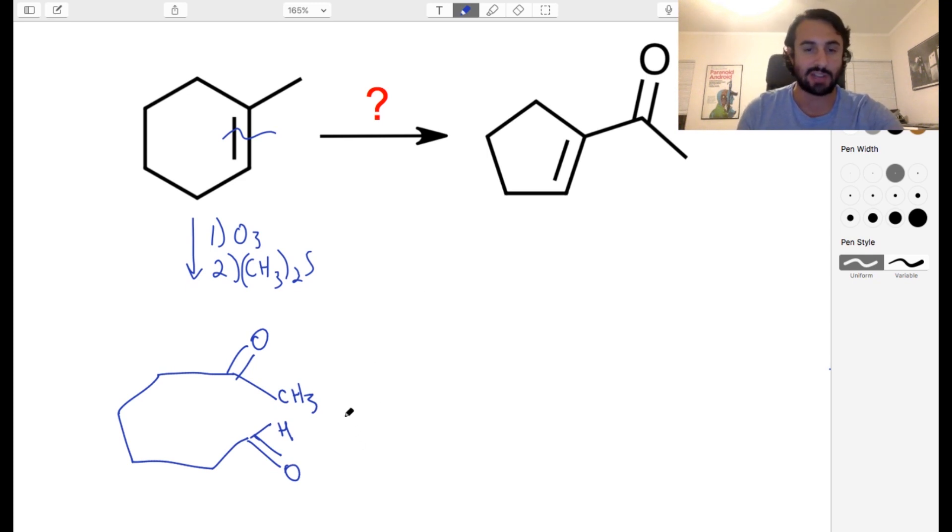And actually we can use just a standard aldol condensation here. So let's use some base, some hydroxide. And so where are we going to deprotonate? Let's deprotonate that at this ketone and we've got two alpha carbons. So we've got a few different alpha protons we can use. I'm going to go ahead and get this one here just to show you what we're doing. Let's get that one.